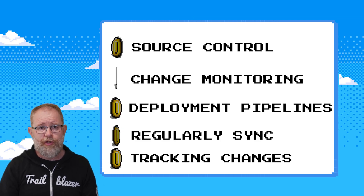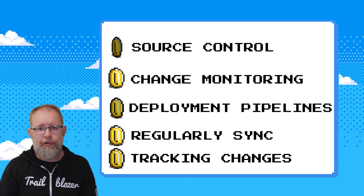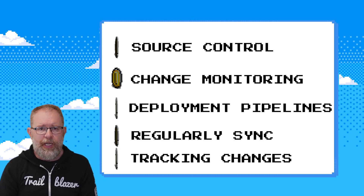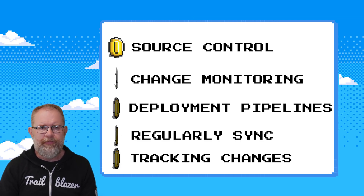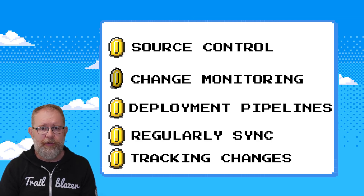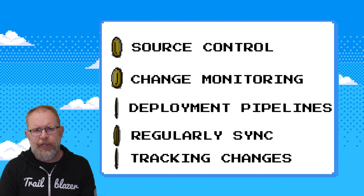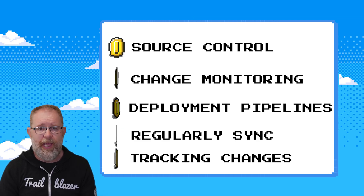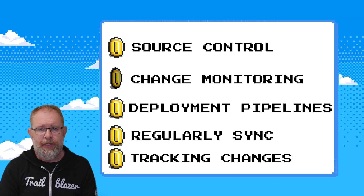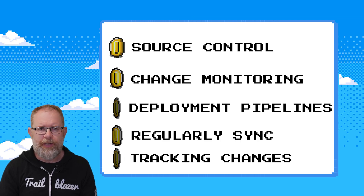Number five is to use change tracking mechanisms. Make use of tools or manual processes that will track changes across your environments. Many teams will benefit from implementing tools that help track metadata changes, giving you a clear view of what has been altered in each environment — that'll help you avoid surprises when you move from development up to production. For example, if you're working with pipelines, solutions like Gearset's developer sandbox updates let you track every promotion to your base branch and ensure those updates are synced back to your sandboxes, keeping them aligned without losing any work in progress.